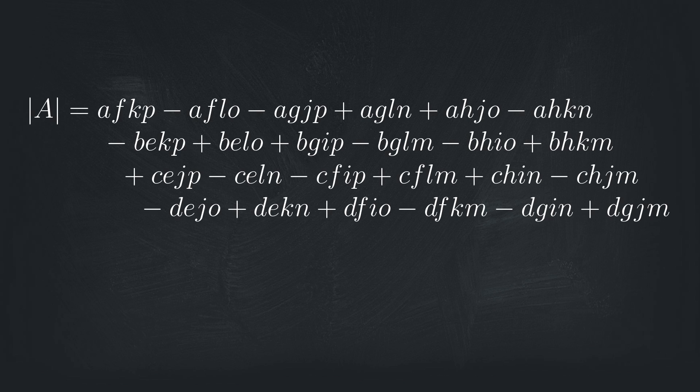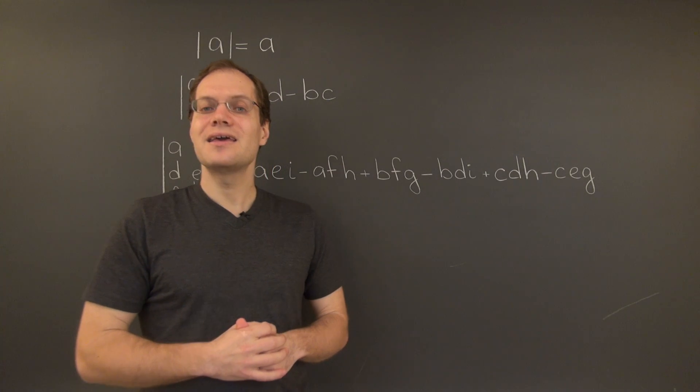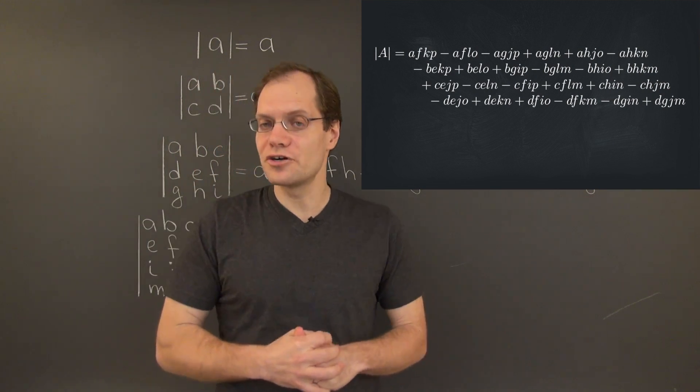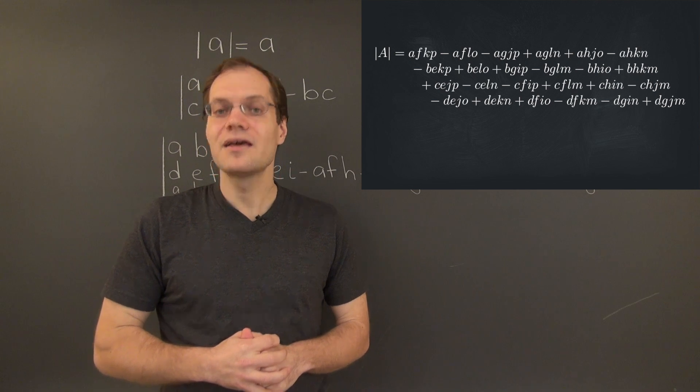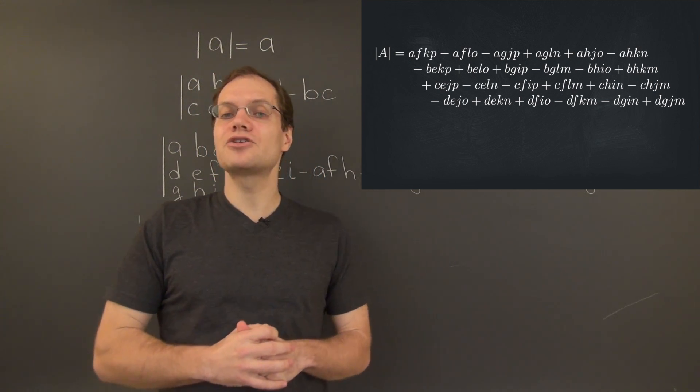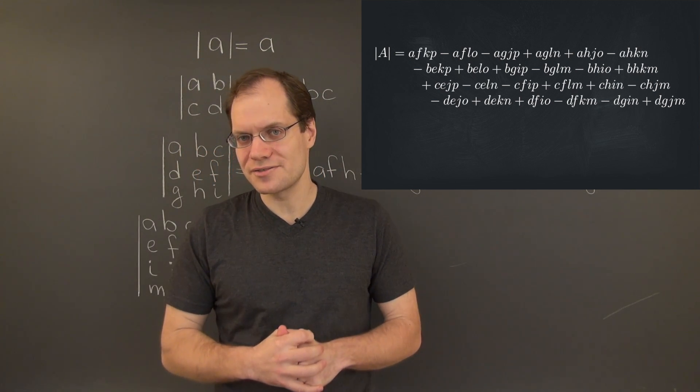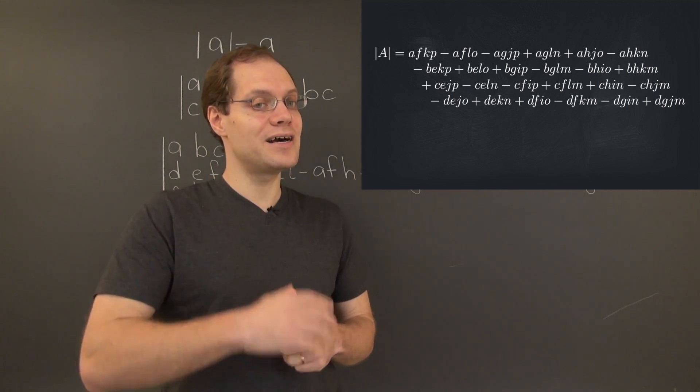Well, do we like it? I'll give you a moment to let it sink in. And before we answer that question, I'd like to point out a few of the features of this new formula. It has 24 terms, 12 with a plus sign and 12 with a minus sign. Each term is now a product of four entries from the matrix.